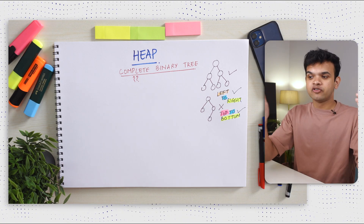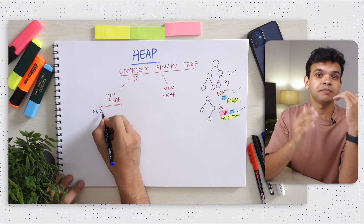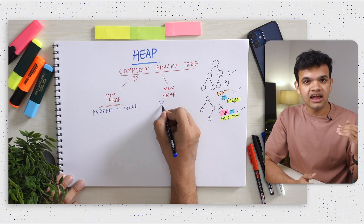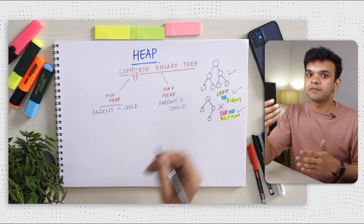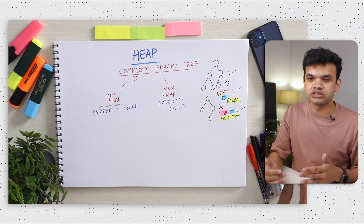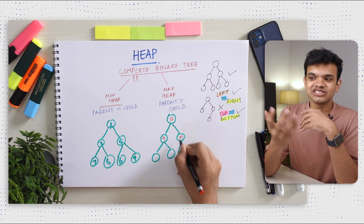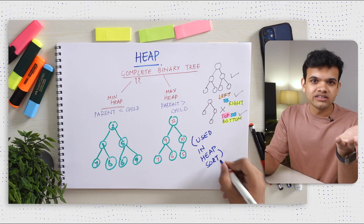Another data structure that looks a lot like a tree but isn't quite a tree is heap. Heap is a complete binary tree — we can only add nodes from left to right and then move on to the next row. There are two types of heaps: min heap and max heap. In a min heap, the parent node should always be smaller than the child nodes. In a max heap, the parent node should always be bigger than the child nodes. Heap is really important in the heap sort algorithm and when we need to keep K things sorted at once.